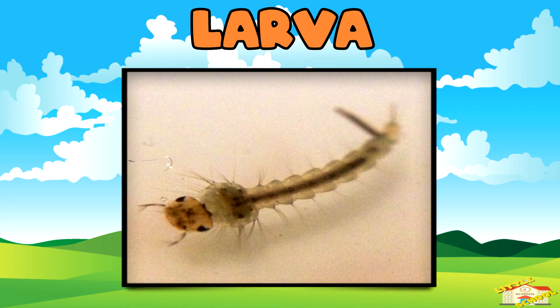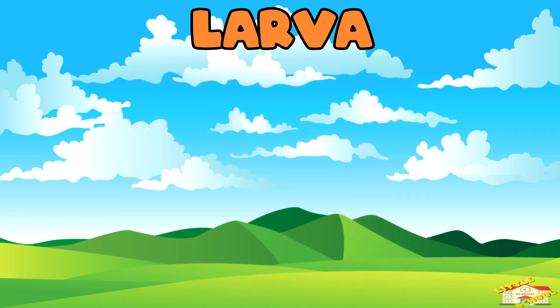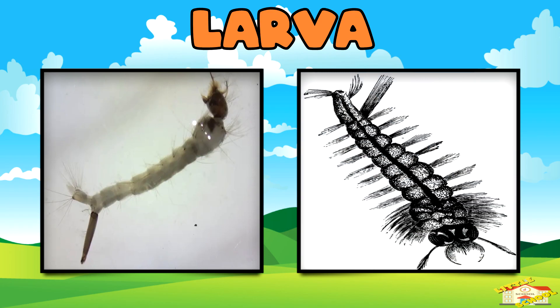Larva. When the eggs hatch, tiny larva come out. They wiggle around in the water, which is why they are sometimes called wigglers.